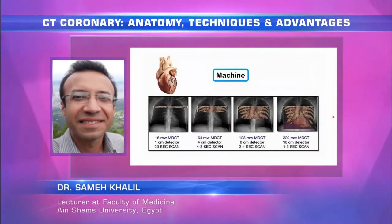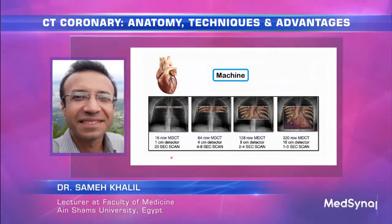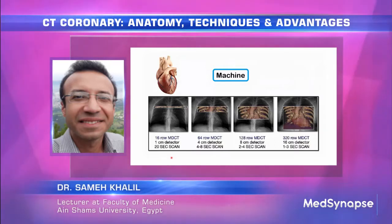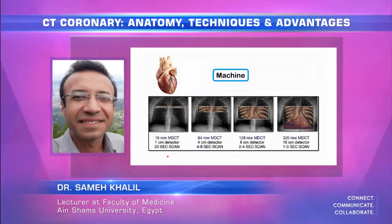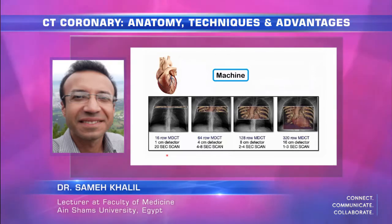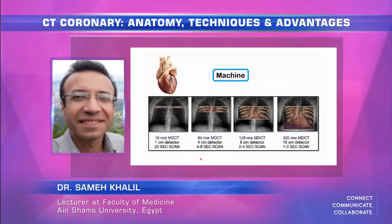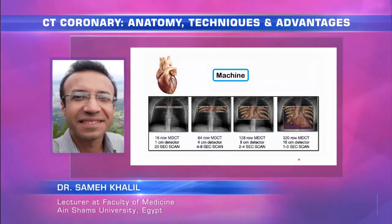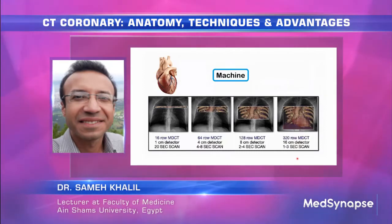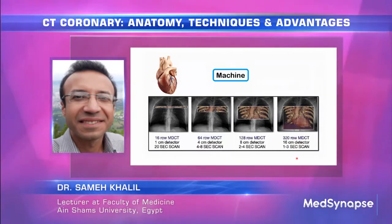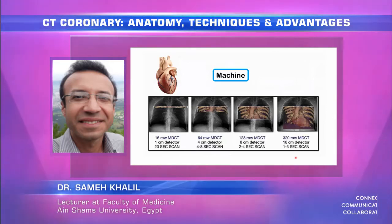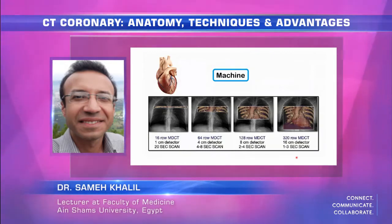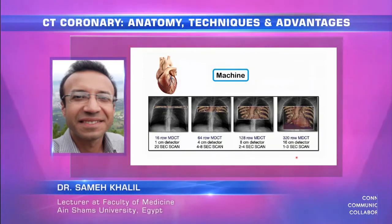We started imaging of CT coronary on machines of 16 multi-detector CT with a reconstruction thickness of 1 mm. Now we have the era of 64 multi-detector CT and above, up to 640, with reconstruction thickness of half a millimeter, so we have significant upgrading in the information revealed from this imaging modality.